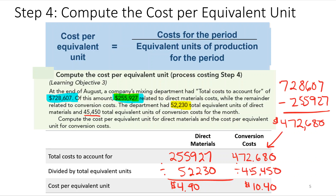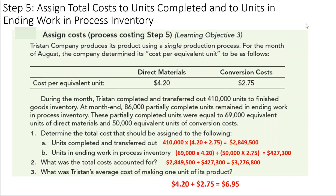Step five is to assign the total cost to units completed and units in ending work in process inventory. Tristan Company determined its cost per equivalent unit in step four. During August, 410,000 units were completed and transferred out. At month end, 86,000 partially completed units remained in ending work in process, equal to 69,000 equivalent units of direct materials and 50,000 equivalent units of conversion costs.